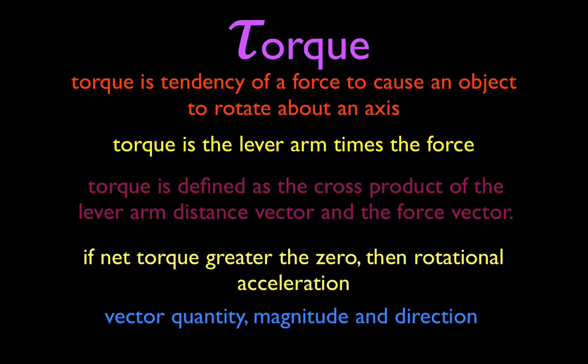If the net torque produced by forces acting on an object is greater than zero, then the object will experience rotational acceleration. Just like with translational motion and Newton's second law — if the net force is greater than zero, the object experiences translational acceleration — in this case it's torque, and if the torques are unbalanced, the object will experience rotational acceleration.